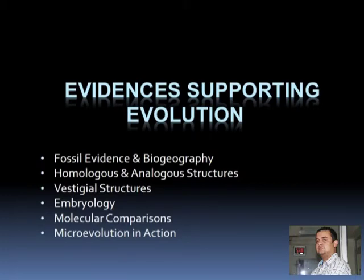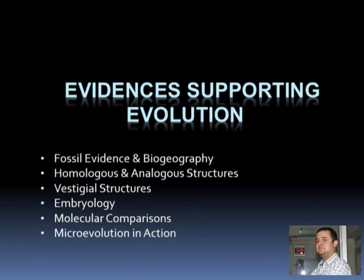Fossil evidence and biogeography provide a lot of evidence for evolution. Then come homologous and analogous structures. If you observe these structures either in extinct animals in the fossil record or in extant, current living organisms, the process becomes very clear. Then vestigial structures — we have some like the appendix, wisdom tooth, or tonsils. Some are a little tricky. Is it really vestigial or not? For example, nipples in men — is it vestigial or something else? If you look at those structures and their function, the process of evolution becomes a lot more clear.